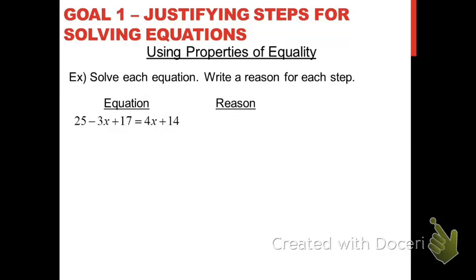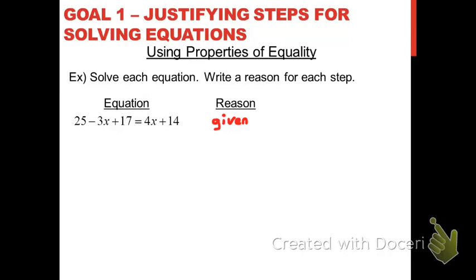You might wonder how to justify that 25 minus 3x plus 17 equals 4x plus 14. Well, at some point you're always given some information — you have a premise you're working off of. The first reason in any equation solving, and in 99.99% of proofs, is that the original statement is true because it was information given to you. Never miss that first step in a proof — this thing is true because it's given to you. Then we apply properties of equality to solve the equation, writing reasons why we know each step is true.